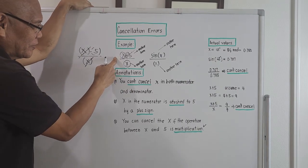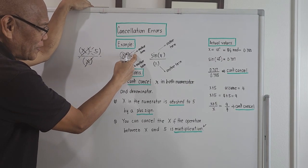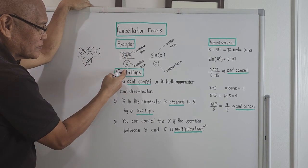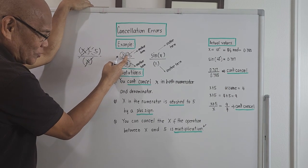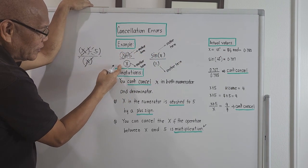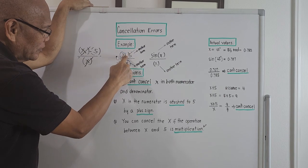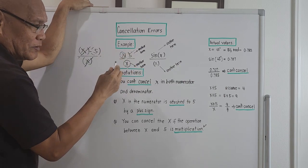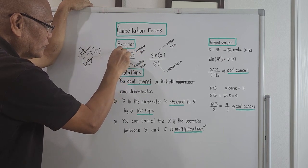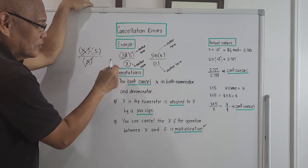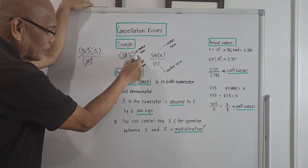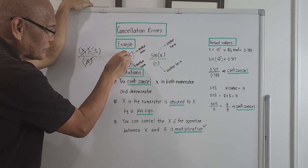If this x is attached to 5 by the operation of addition, you cannot cancel x and x. Supposing it is subtraction, it's the same — you cannot cancel it. The only time you can cancel x and x is if x and 5 are related by the operation of multiplication.